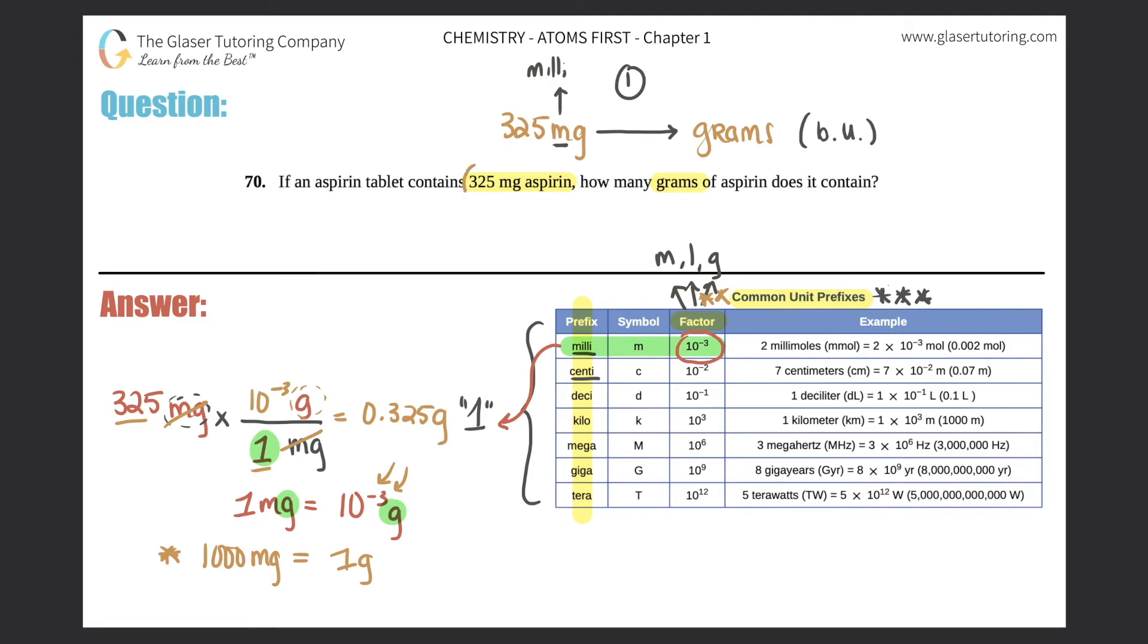Now for sig figs, you started off with 325. So that's three sig figs. So just know that your answer has to have three sig figs in it as well. So it's the 3, 2, and the 5. I always put this zero here for habit. But remember, this is a leading zero, LZ. And leading zeros do not count. So here would be three sig figs.